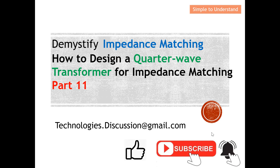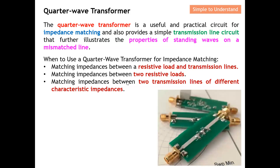Let's quickly understand what a quarter wave transformer actually is. This quarter wave transformer is a very useful and practical circuit for impedance matching. It also provides a very simple transmission line circuit that illustrates the properties of standing waves on a mismatched line. This way of doing impedance matching is the easiest — you just need one formula in order to implement the quarter wave transformer to perform impedance matching.